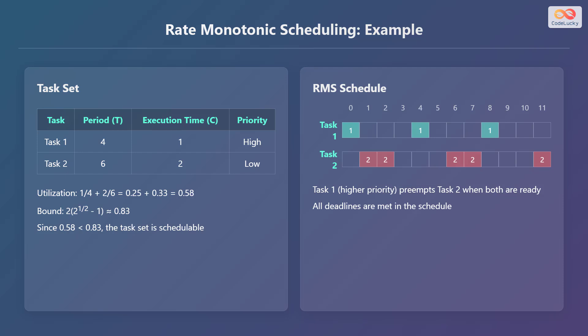Let's consider an example to illustrate how Rate Monotonic Scheduling, or RMS, works. We have two tasks. Task 1 has a period of 4 and an execution time of 1, giving it a high priority. Task 2 has a period of 6 and an execution time of 2, and therefore has a low priority.